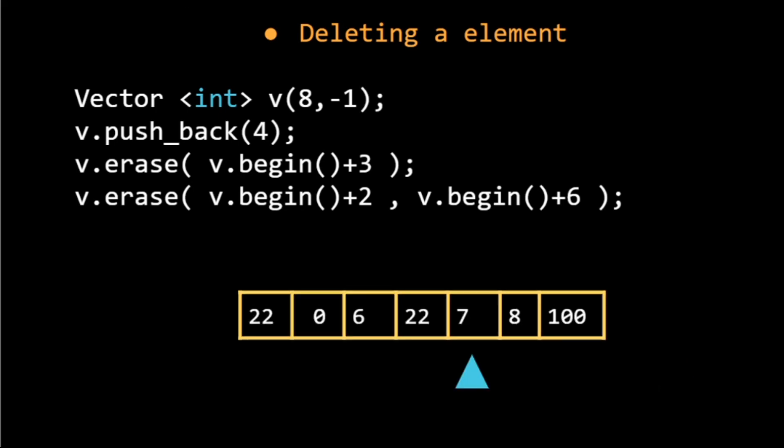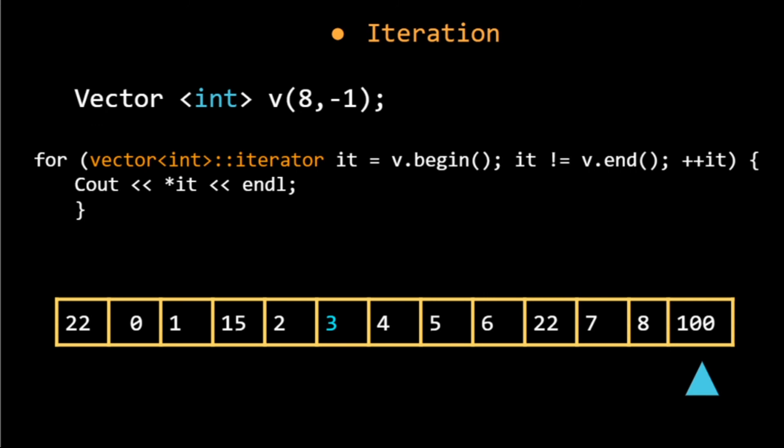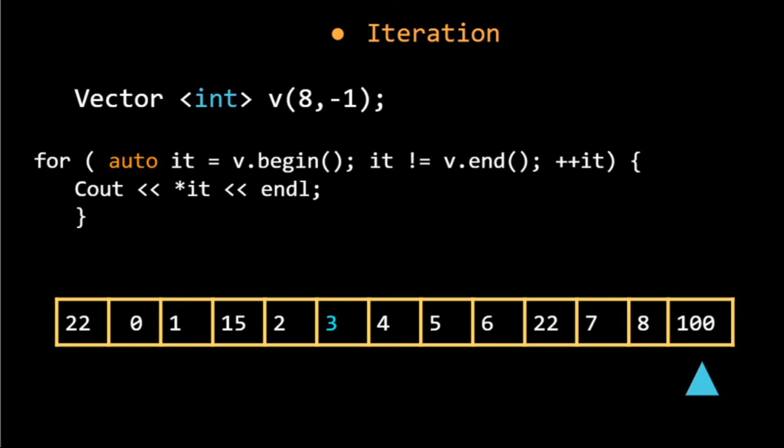Now as we have seen earlier that we can iterate over the vector with the help of index loop, but if we want an iterator, we can define an iterator something like this: vector<int>::iterator and then giving it a name. Here we have initialized the iterator it, and then we are giving it starting point v.begin(), and then writing the condition. For getting the value, we are dereferencing it by writing *it so that we can get value out of it.